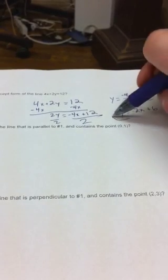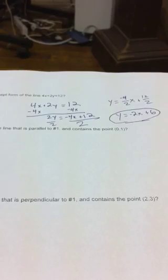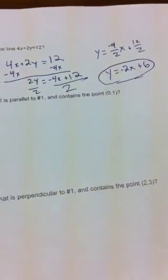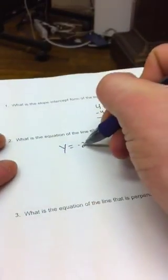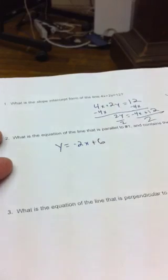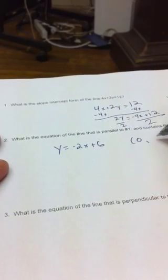So the slope-intercept form of the line 4x plus 2y equals 12 is y equals negative 2x plus 6. Moving on to number 2: what is the equation of the line that is parallel to number 1 and contains the point 0, 1? Our first equation was y equals negative 2x plus 6, and we want it to contain the point 0, 1.